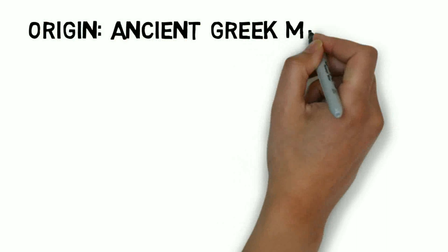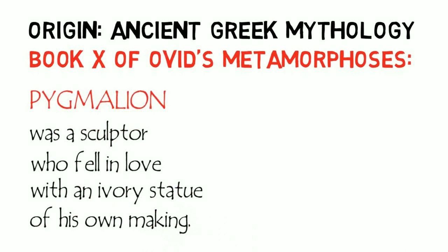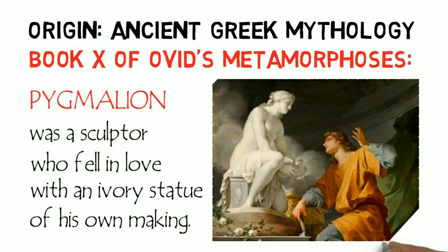Historically, the Pygmalion effect has its origin in ancient Greek mythology. In fact, it is named after the Greek myth of Pygmalion, which was narrated in Book 10 of Ovid's Metamorphosis. Pygmalion was a sculptor who fell in love with an ivory statue of his own making. Enamored by the beauty of the statue, Pygmalion begged the gods to give him a wife in the likeness of the statue, and the gods granted his request, resulting in the ivory statue coming to life.